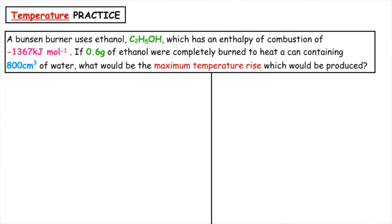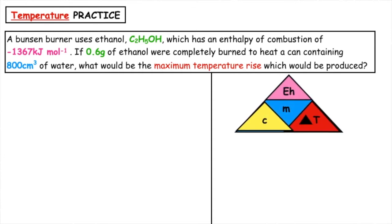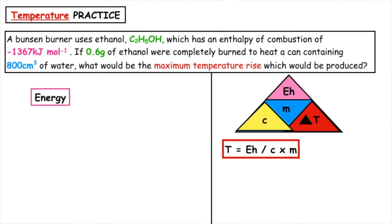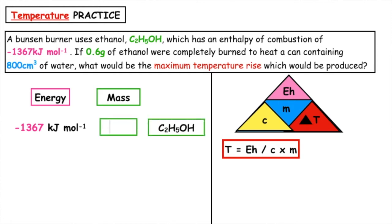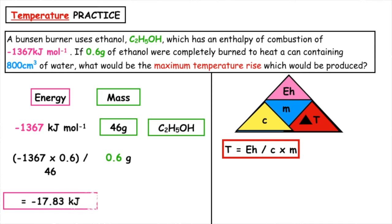The first thing we want to do is split our page — on the left-hand side we're going to have a proportion, and on the right-hand side we're going to use our triangle. The question wants us to calculate the temperature, so the formula is T is equal to E_h divided by C times m. We're told that 1367 kilojoules per mole is released when ethanol is burned, and one mole of ethanol is equal to 46 grams. We're given 0.6 grams, so we cross-multiply: 1367 times 0.6 divided by 46 gives us 17.83 kilojoules of energy released. Inserting that into our formula — making the energy positive — 17.83 divided by 4.18 times 0.8 gives us a temperature rise of 5.33.